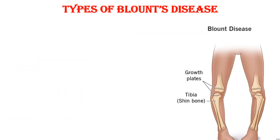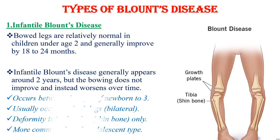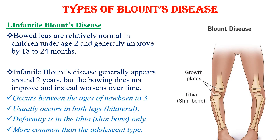There are two types of Blount's disease: the infantile type and the adolescent type. Bow legs are relatively normal in children under age 2 and generally improve by 18 to 24 months. Infantile Blount's disease generally happens around age 2, but the bowing does not improve and instead worsens over time, unlike the physiologic bow legs that occur in children less than 2 years. This infantile type occurs between newborn and 3 years, usually in both legs bilaterally, and is more common than the adolescent type.